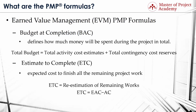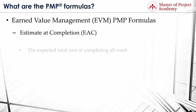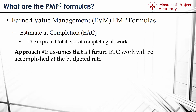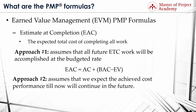PMP formula number 9: Estimate at Completion or EAC. EAC is the expected total cost of completing all work, expressed as the sum of the actual cost to date and the estimated sum to complete the project. We can find the EAC value by three different approaches using EV, SPI, and CPI values. Approach 1 assumes that all future ETC work will be accomplished at the budgeted rate: EAC equals AC plus the result of BAC minus EV. Approach 2 assumes that the achieved cost performance till now will continue in the future: EAC equals BAC divided by CPI.